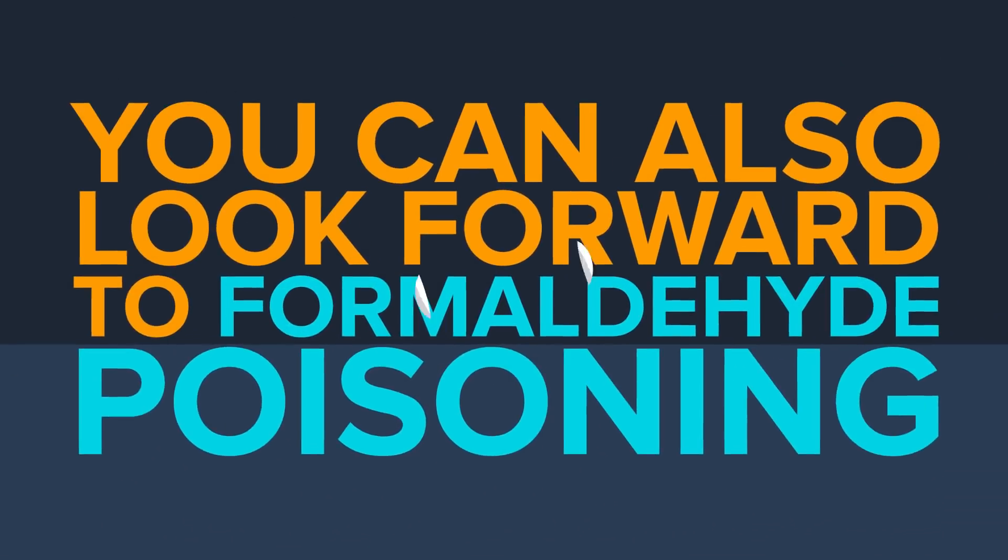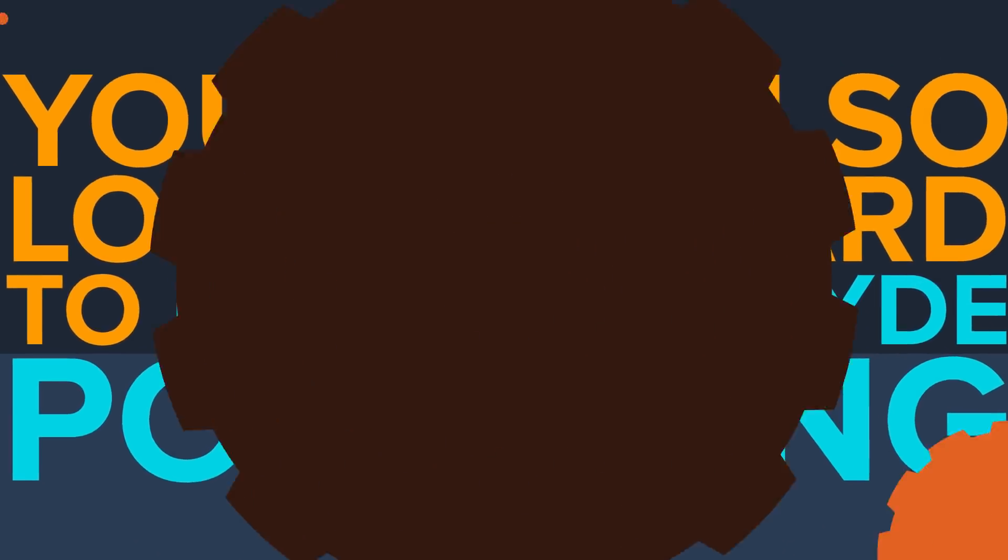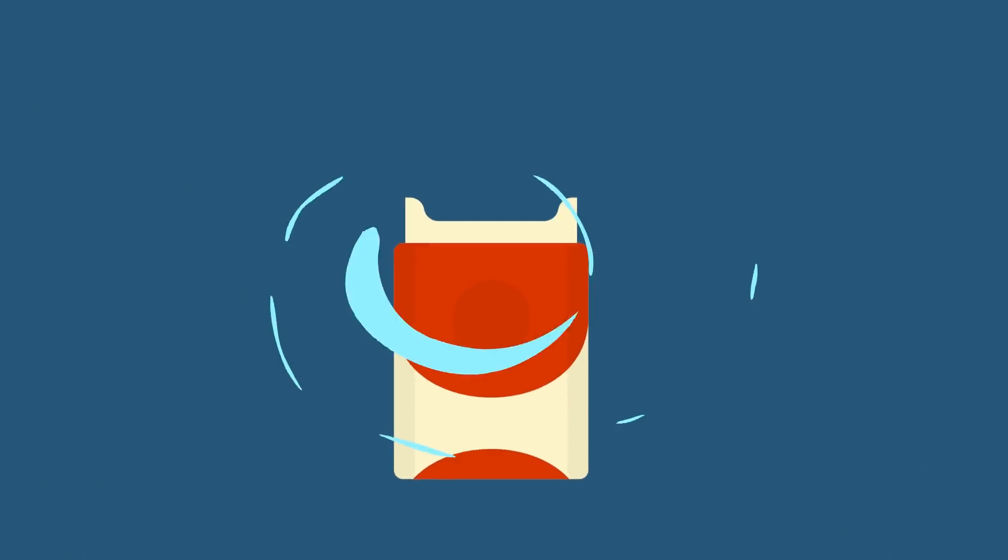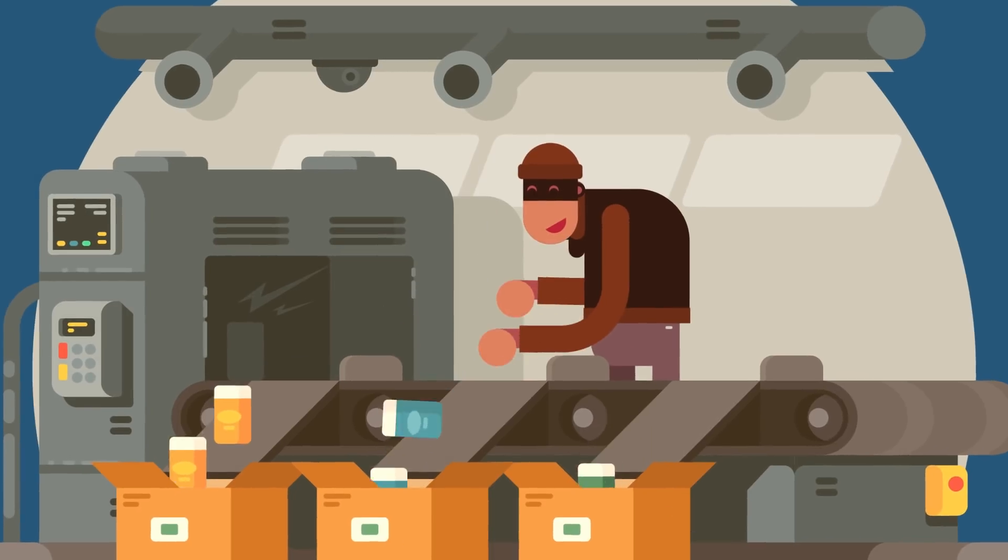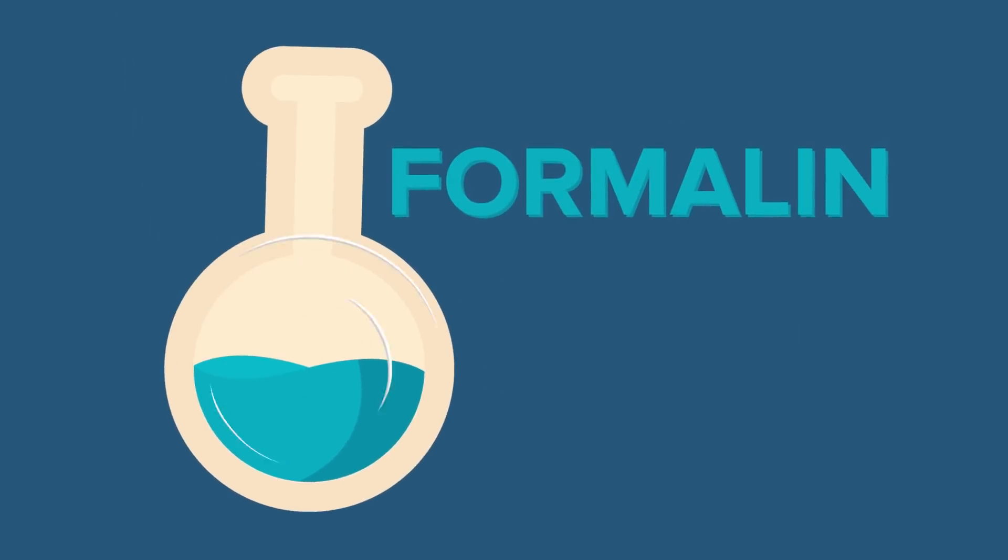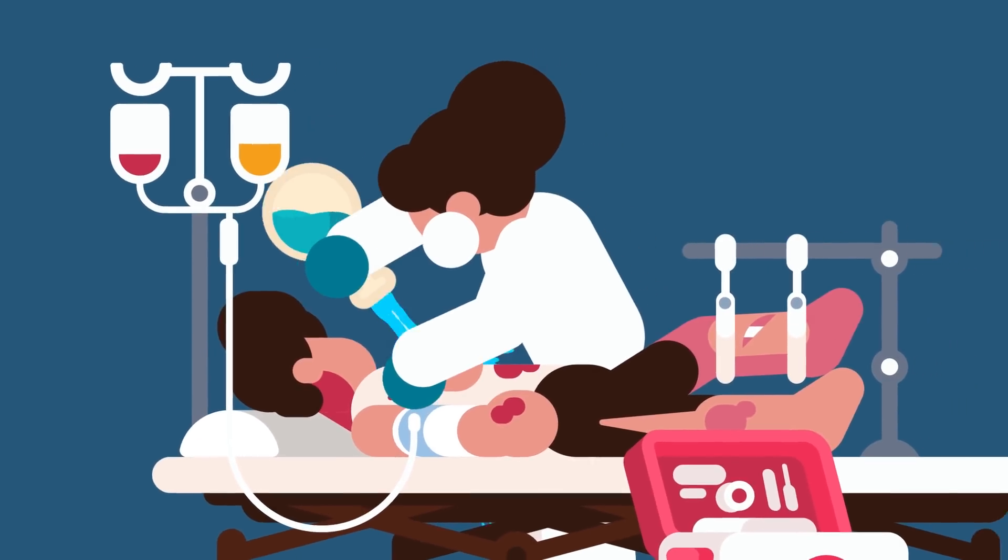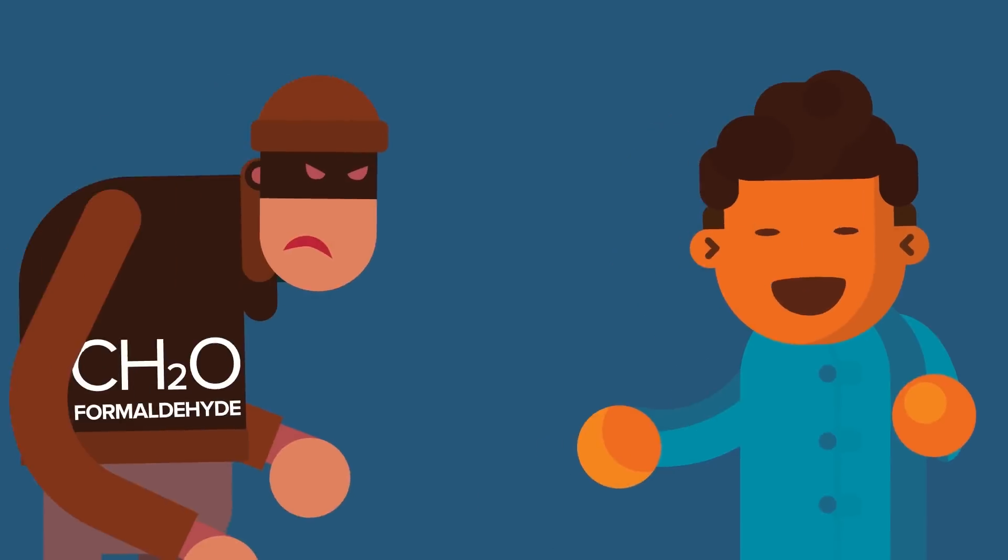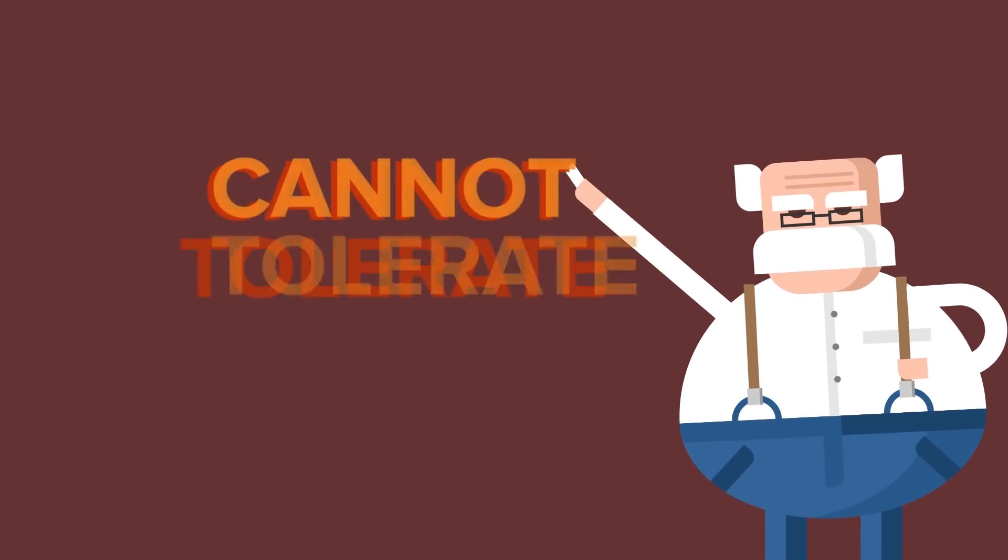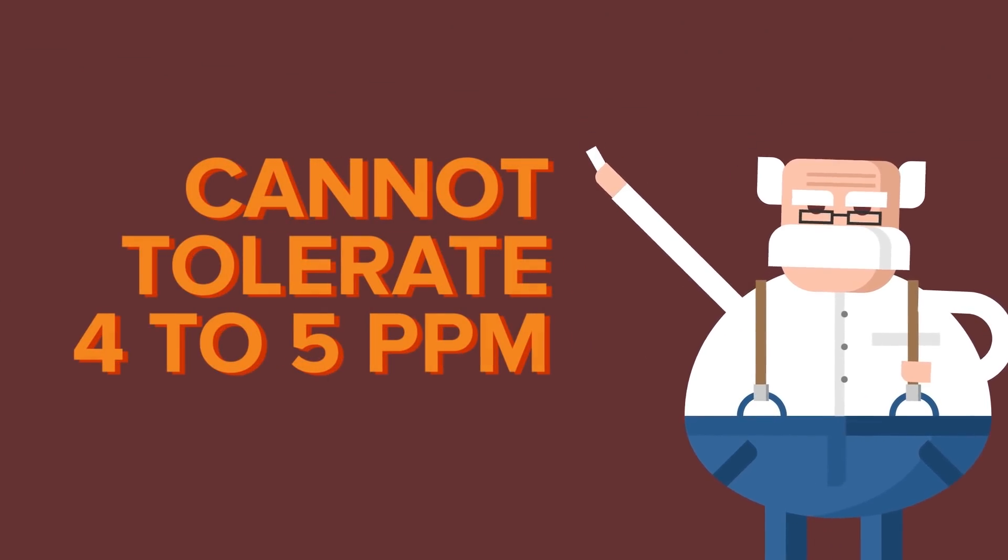Number 4. You can also look forward to formaldehyde poisoning. Formaldehyde is another colorless gas that is found in cigarette smoke. It is used in manufacturing building materials and other products. A watered-down version of formaldehyde called formalin is used as a preservative for medical and funeral purposes. Humans can tolerate exposure to small amounts of formaldehyde, but the CDC notes that many subjects cannot tolerate prolonged exposures to 4-5 ppm.